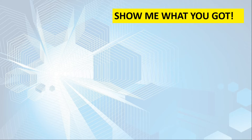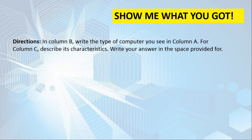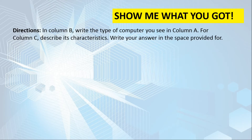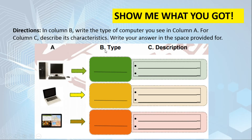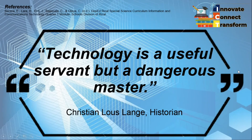I hope all the information presented in our lesson is clear. Let's try to do this activity: In column A, write the type of computer you can see, and in column B, describe its characteristics. There are three types of computers shown — identify each and write two descriptions that best describe them. You can write your answers on a piece of paper and submit it to your subject teacher. Before we end, I'll leave you with this quote from historian Christian Lou Lange: 'Technology is a useful servant but a dangerous master.' That's all for today, class. Thank you, see you in our next video!